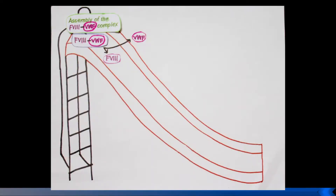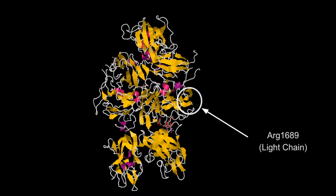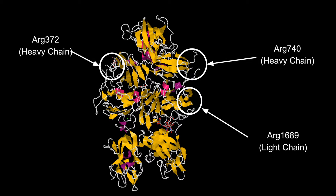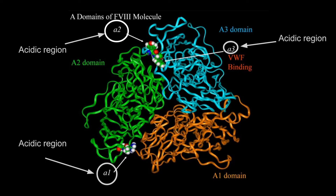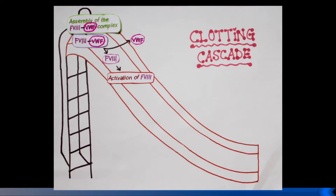When you get hurt, thrombin cleaves Factor VIII, which causes loss of binding with von Willebrand factor. Thrombin cleaves at one specific site within the light chain and at two sites in the heavy chain. The A domains are bordered by acidic regions that contain clusters of aspartate and glutamate residues and several sulfated tyrosine residues.